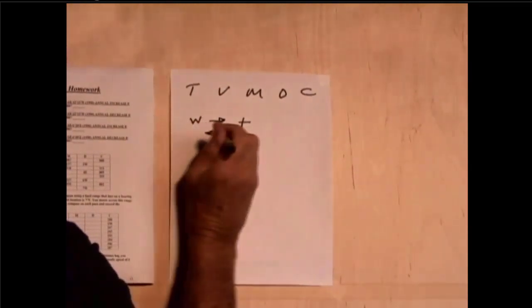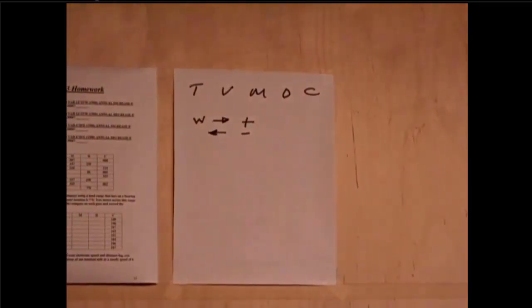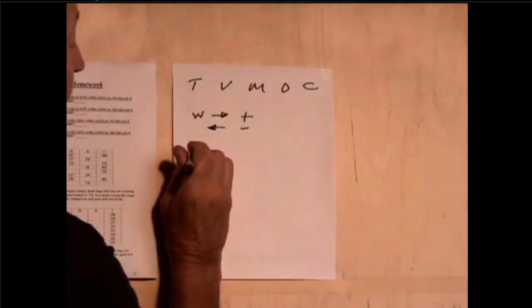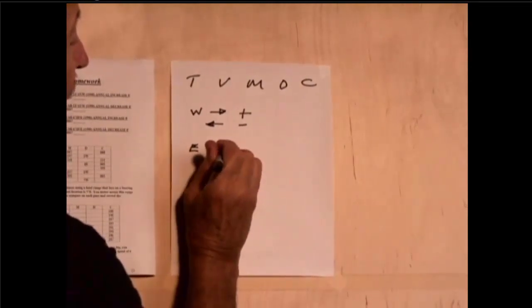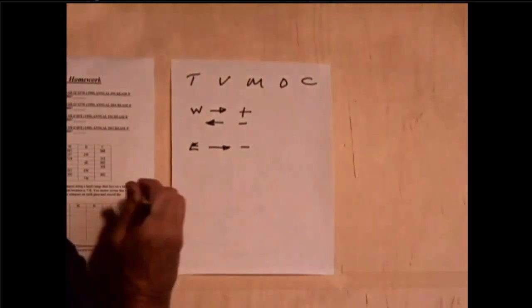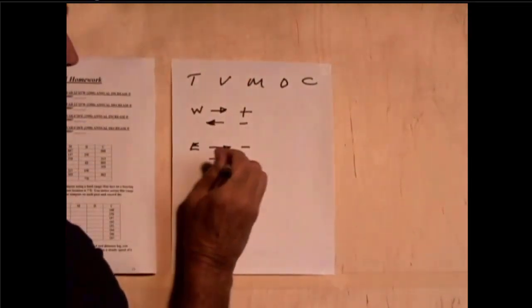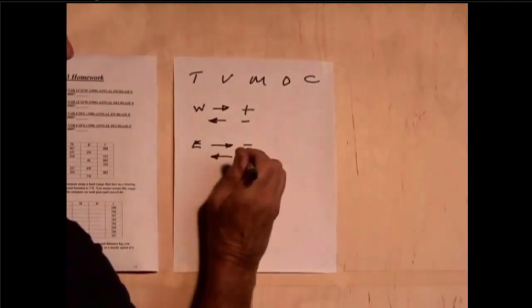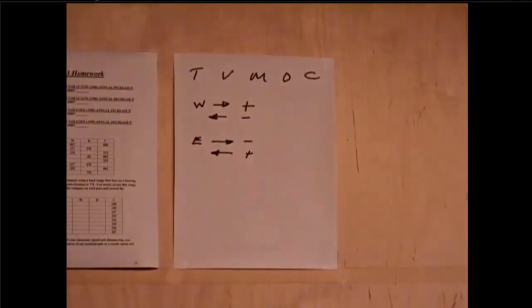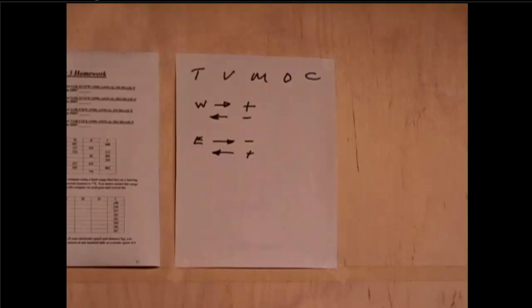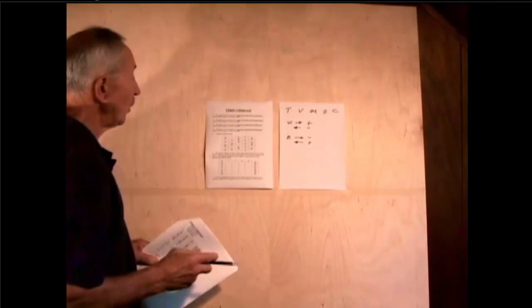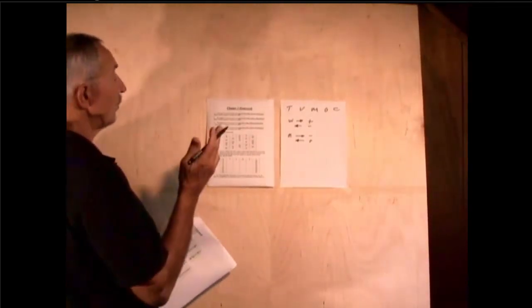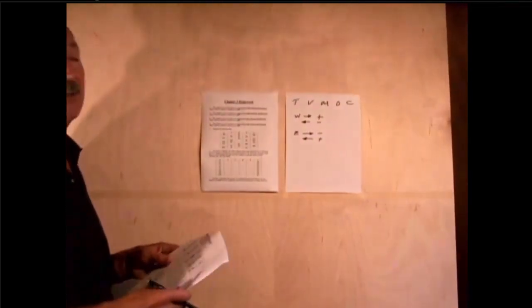If we have easterly variation or deviation, moving from left to right, we'll subtract. From right to left, we'll add. So with that in mind, let's look at the table in chapter 3 homework, question number 5, and it says complete the following table.